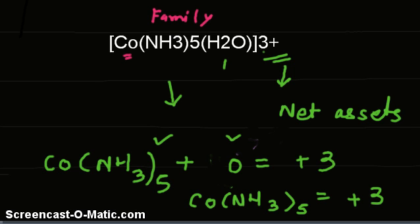The net charge is the net worth or assets of the family. Let individual entities like H2O and NH3 be the members, and the charge they carry is their contribution. Progressively eliminate each family member so we can finally find the charge or contribution by the central member, cobalt.